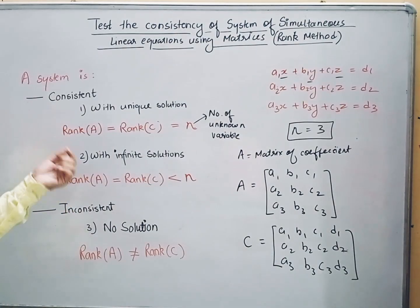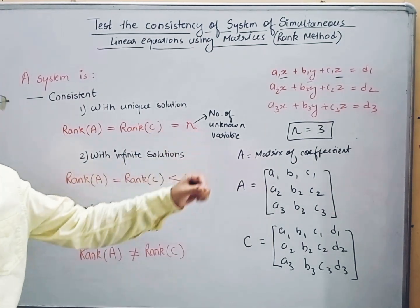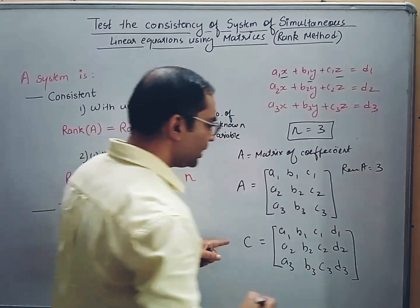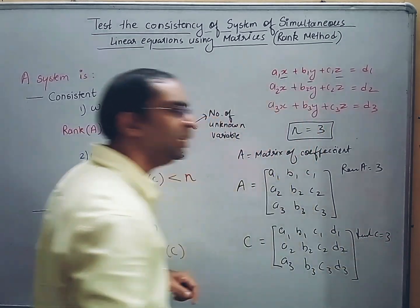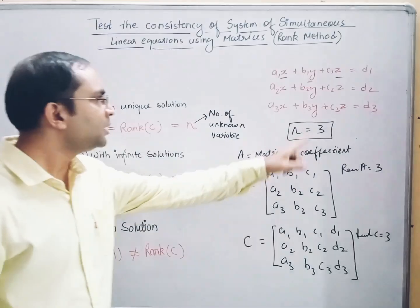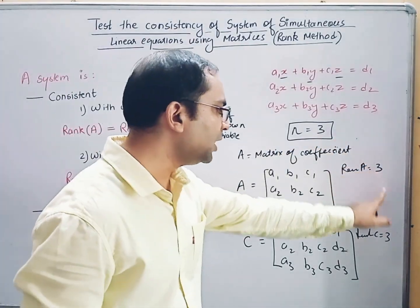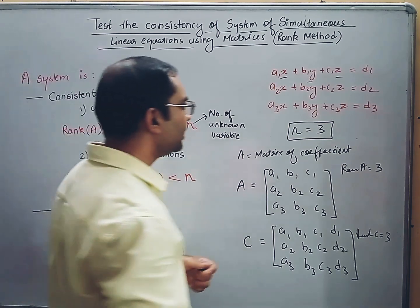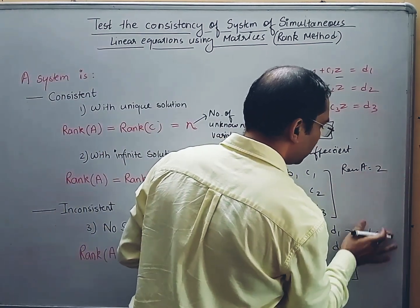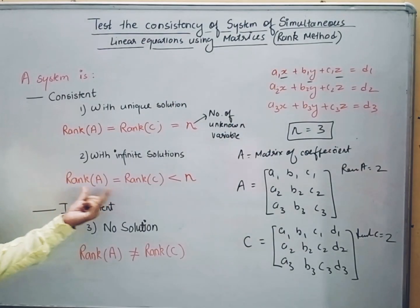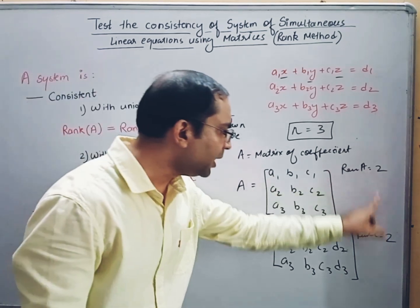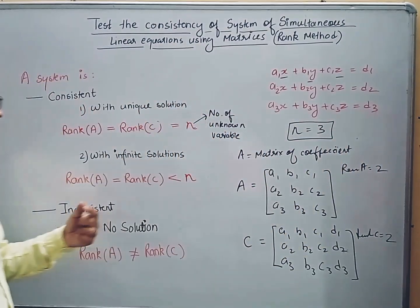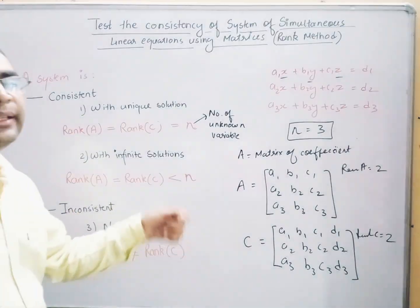Let us discuss all three cases. In the first case, rank of A, rank of C, and n are all equal — say n is 3, rank of A is 3, and rank of C is 3. Then the system is consistent with a unique solution. In the second case, let rank of A equal 2 and rank of C equal 2 — both equal each other but are less than n which is 3. In this case, the system is consistent but will have infinitely many solutions.